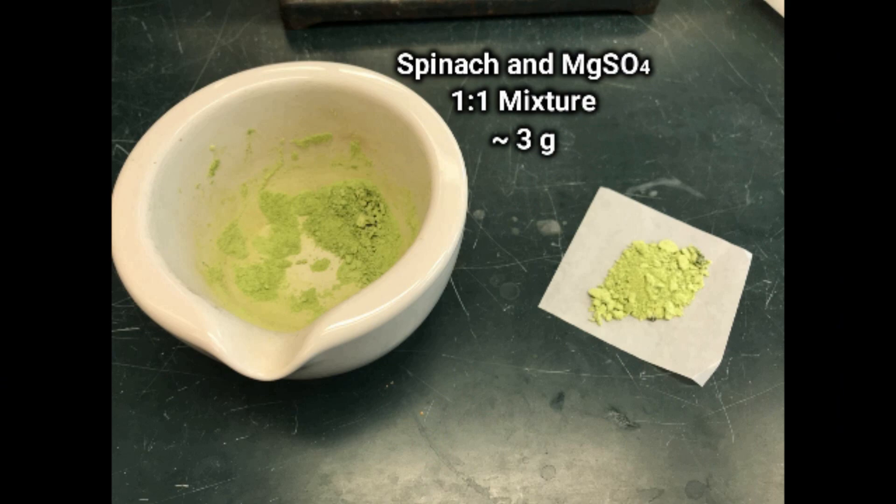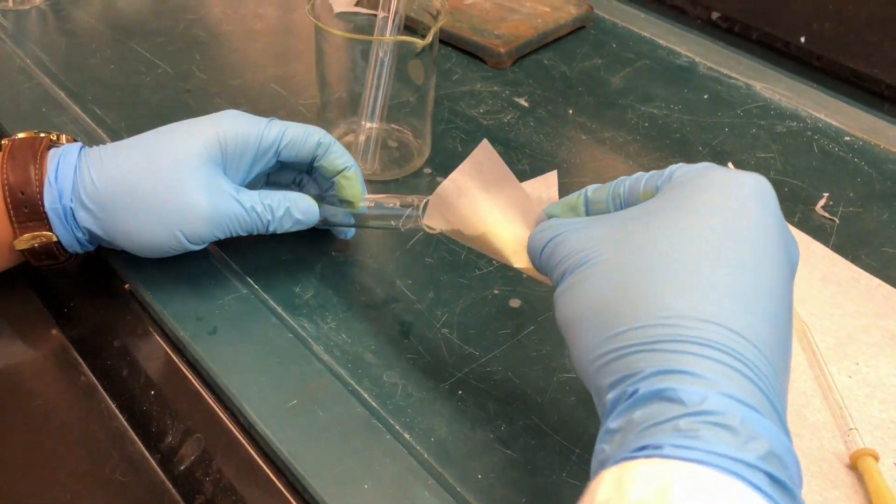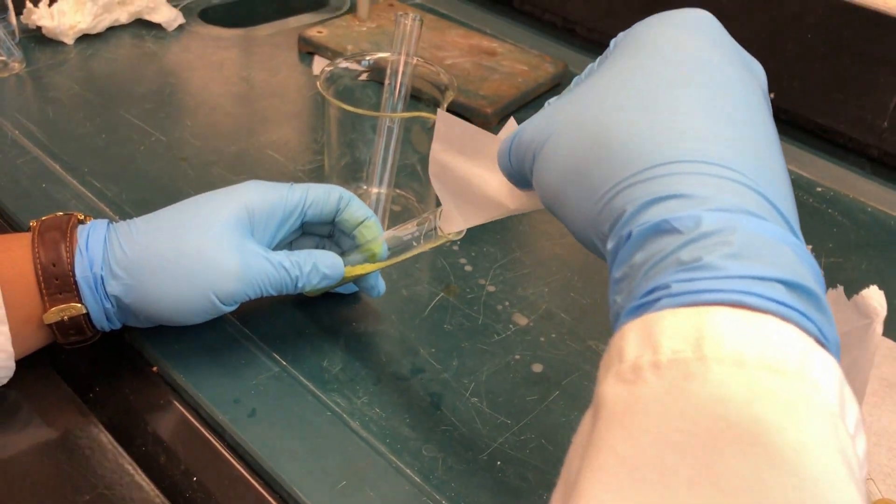Next, weigh about 3 grams of the spinach mixture and carefully add it to a test tube. You can use a spatula or make a funnel from the weighing paper.